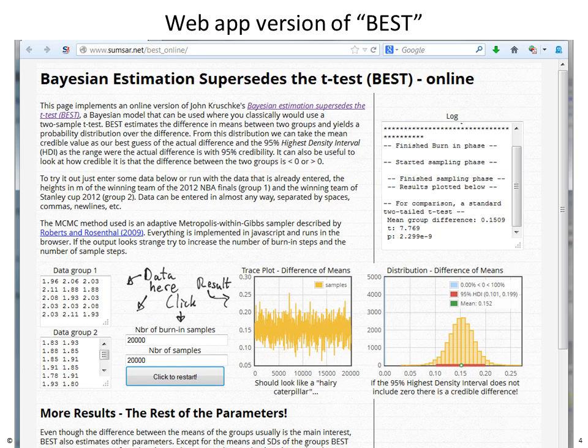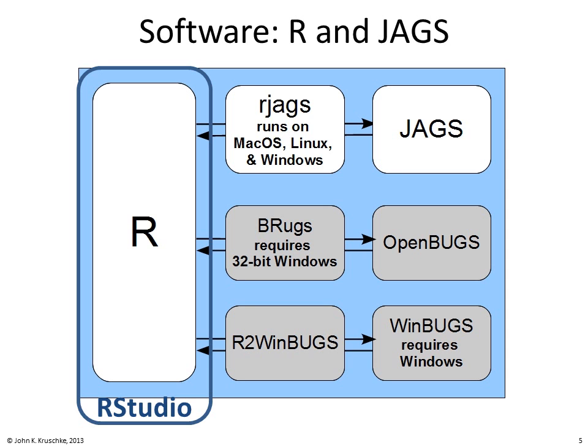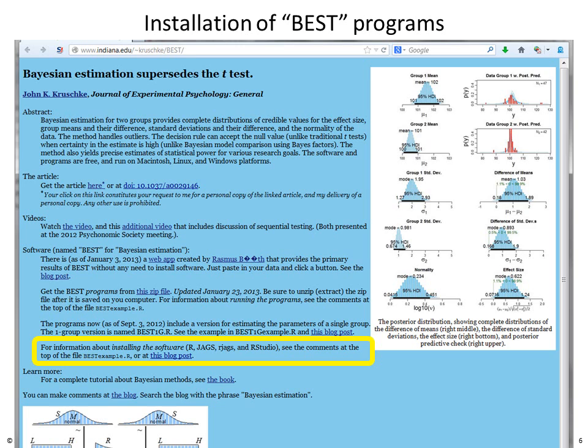If you want the full-blown version of BEST, you'll need to install some software. To run BEST on your computer you'll have to install R and JAGS. R is a general purpose programming system used by many statisticians. It communicates with Bayesian software called JAGS via a package called RJags. Some of you may have heard of BUGS, which were predecessors to JAGS. We'll also be using an environment called RStudio to edit and view R.